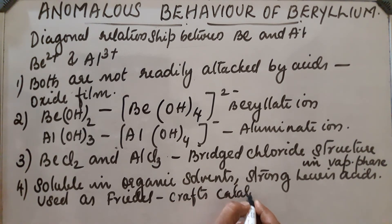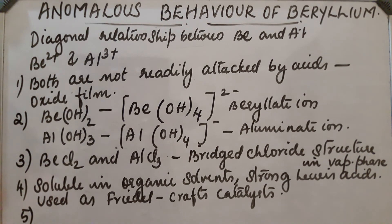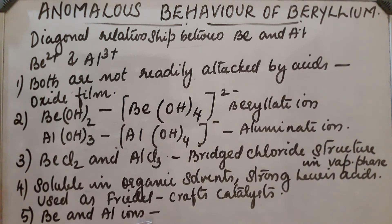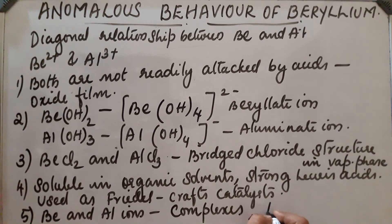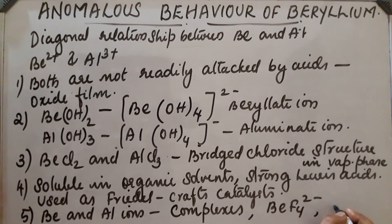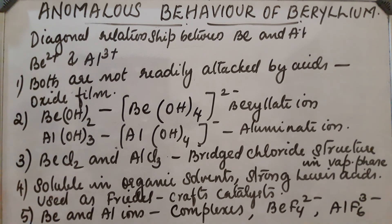Next, beryllium and aluminium ions have a strong tendency to form complexes — for example, BeF₄²⁻ and AlF₆³⁻. These are the key similarities illustrating the diagonal relationship between beryllium and aluminium.